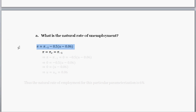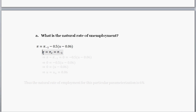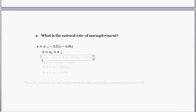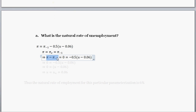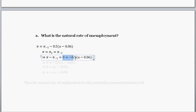Part A asks: given this Phillips curve equation, what is the natural rate of unemployment? We find the natural rate of unemployment by setting the change of inflation equal to zero — that is, we want inflation going from period T minus one to period T to equal zero. So we're finding the unemployment rate such that inflation in one period equals inflation in the next period, equal to expected inflation.